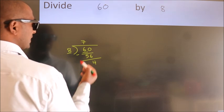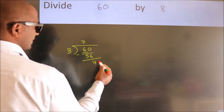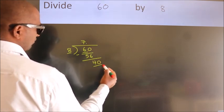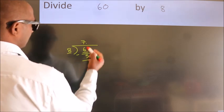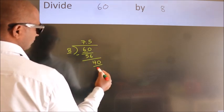So what we do is put a dot and take 0, giving us 40. When do we get 40 in the 8 table? 8 times 5 is 40.